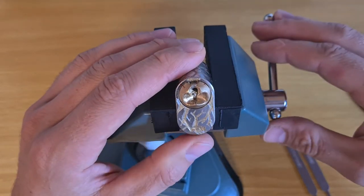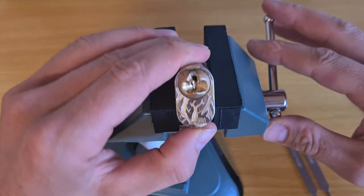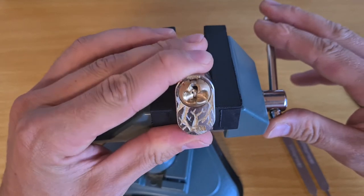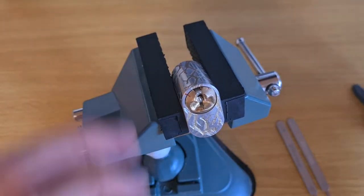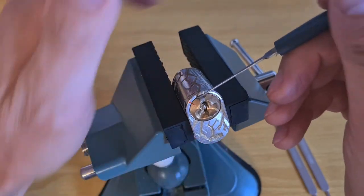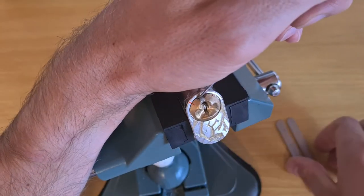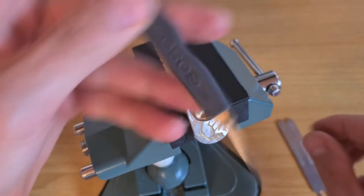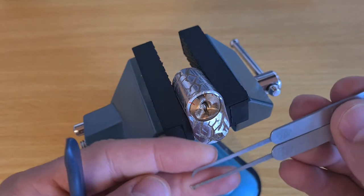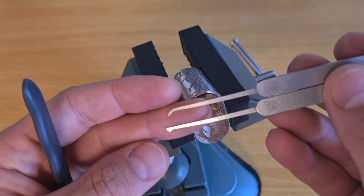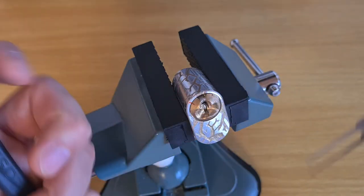Turns out it looks very scary but picks actually quite easily once you know how. So it's kind of a sheep in wolf's skin I think. So I'm going to need this cheap peek as a tensioner and just two hooks, a half diamond and a small hook.